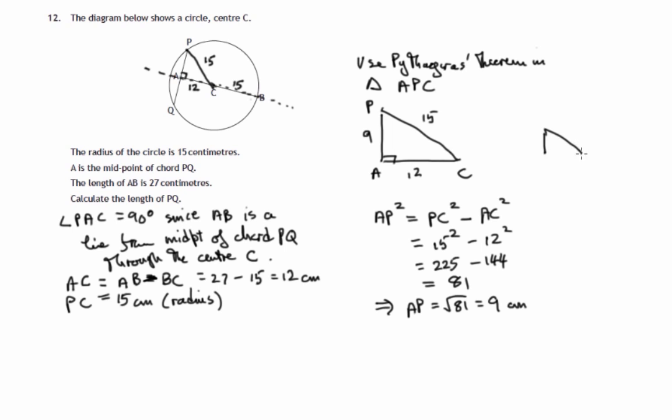You'll notice that a 3, 4, 5 triangle scaled up by a factor of 3 will produce this. There's another way that you could produce that 9 fairly quickly.